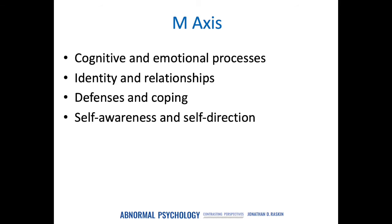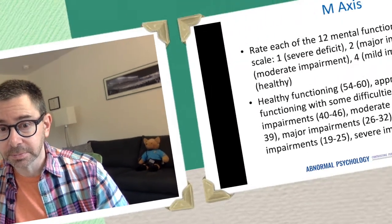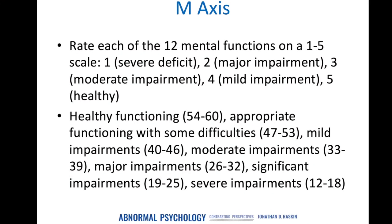The PDM's M-axis provides a profile of mental functioning, assessing patients in four areas: their cognitive and emotional processes, identity and relationships, defenses and coping, and self-awareness and self-direction. When evaluating someone on the M-axis, we rate them along various mental functions using a 1 to 5 scale, producing an overall score ranging from 12 to 18 for severely impaired individuals to 54 to 60 for highly healthy and functioning individuals.